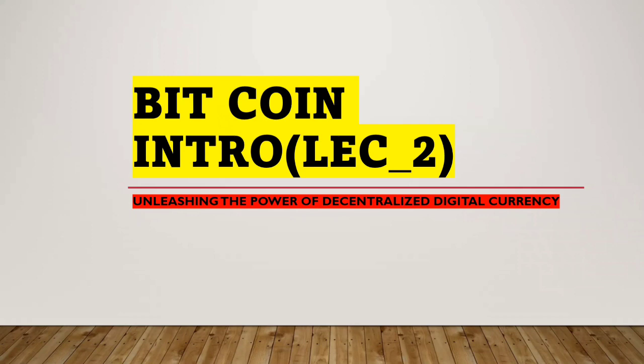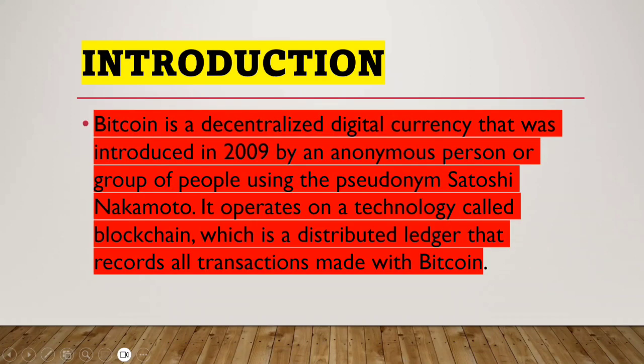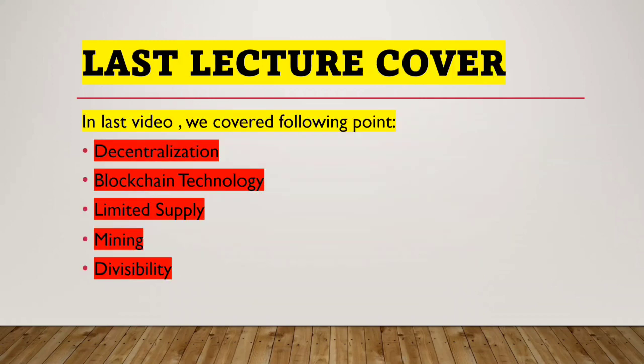So here is an introduction: Bitcoin is a decentralized digital currency that was introduced in 2009 by an anonymous person or group of people using the pseudonym Satoshi Nakamoto. It operates on a technology called blockchain, which is a distributed ledger that records all the transactions made with Bitcoin.